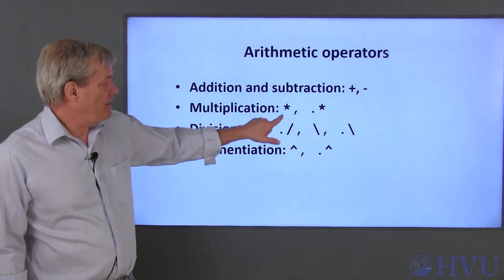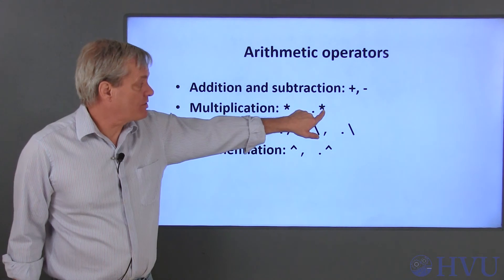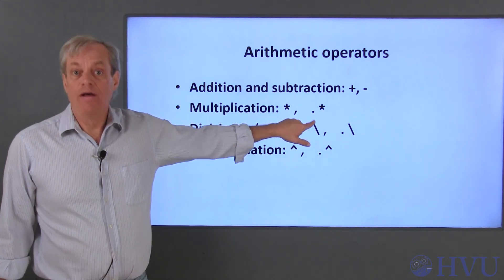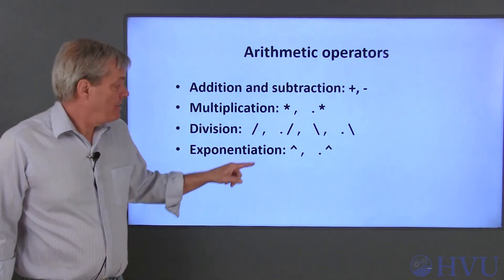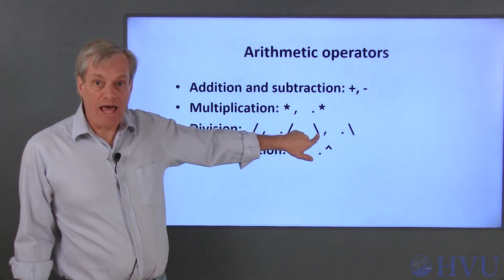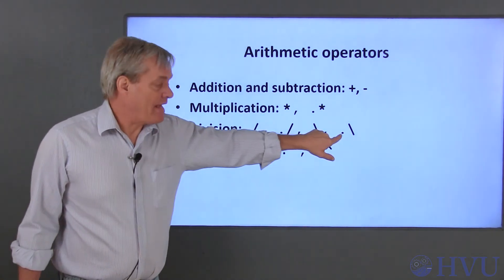Multiplication can be done either with an asterisk or an asterisk with a dot in front of it. There are four division operators, either a forward or a backward slash, either with or without a dot.